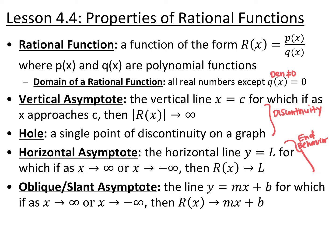Your end behavior involves horizontal or oblique (slant) asymptotes. The horizontal line y equals L is your horizontal asymptote, for which as x approaches either positive or negative infinity, your function approaches that value L. Oblique or slant asymptotes are y equals mx plus b lines, for which as x approaches either positive or negative infinity, your graph approaches that oblique line. Those are both forms of end behavior.